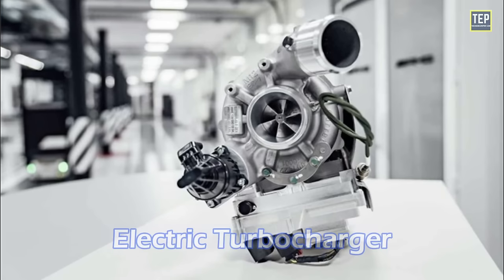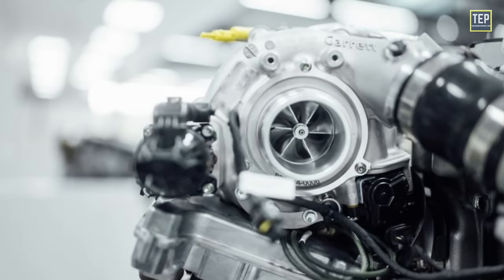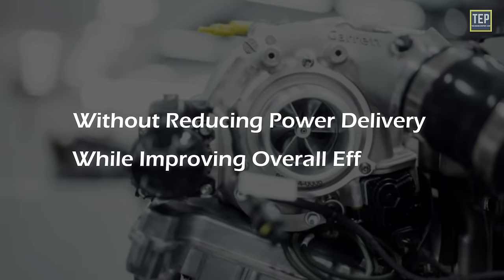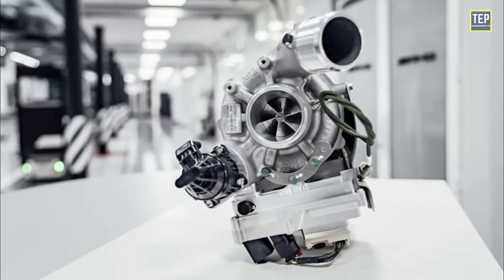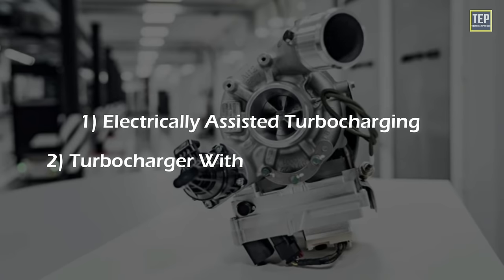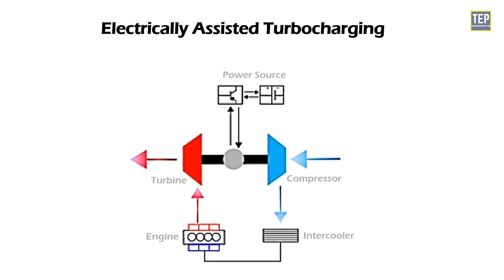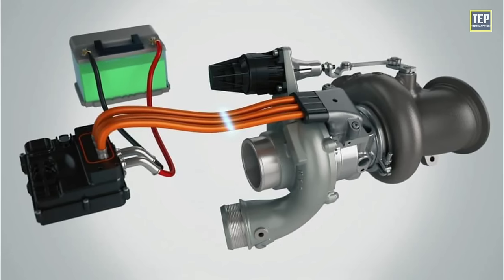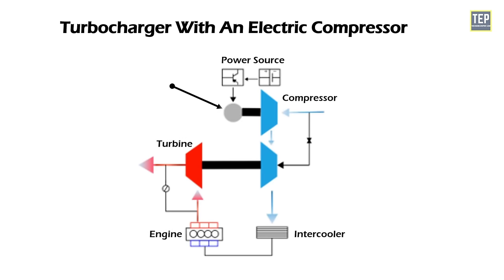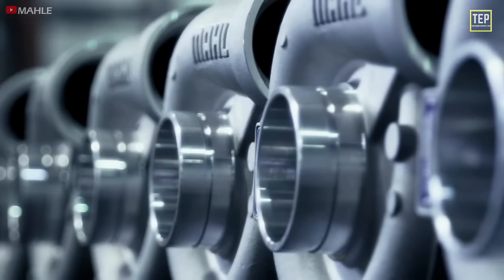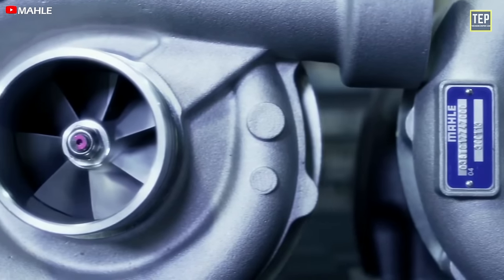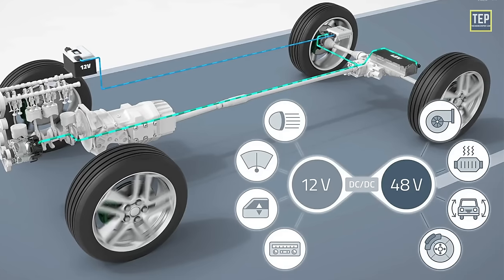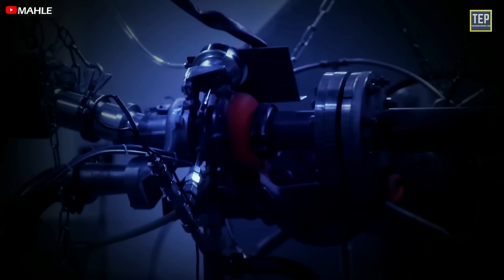The history of the turbocharger is far from over. The high demands for emission reduction and electrification pave the way for new technologies. Electric turbochargers are the future of turbocharger technology, proposing a new solution for moving to smaller engines without reducing power delivery while improving overall efficiency. Currently there are two types of electric boosting systems: electrically assisted turbocharging and a turbocharger with an electric compressor. In an electrically assisted turbocharger, the electric motor can drive the turbocharger shaft or act as a generator to create electricity. By directly connecting an electric motor to the compressor wheel, turbo lag and insufficient exhaust gases can be virtually eliminated, improving drivability and performance.